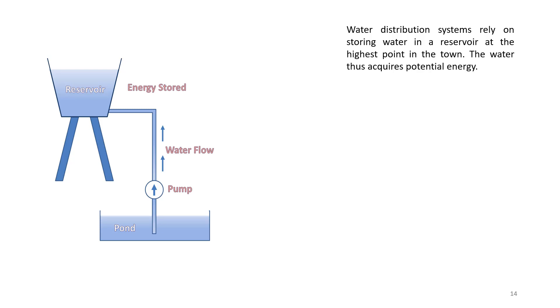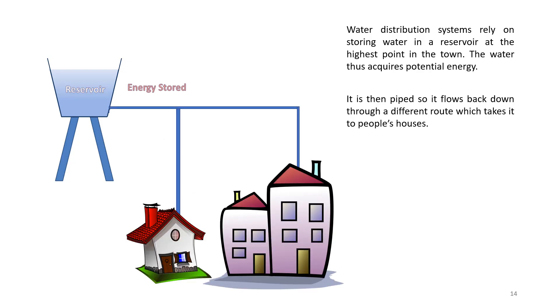We are doing negative work because this work is against the gravitational field. This however will give the water in the reservoir some potential energy. Now we can let the water flow back down to the earth by piping it through a different route down to people's houses.